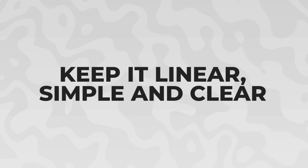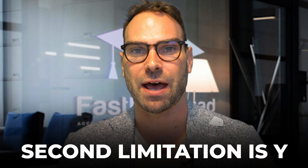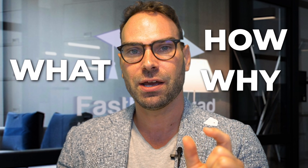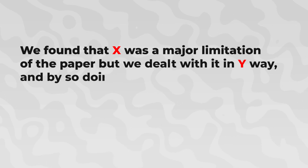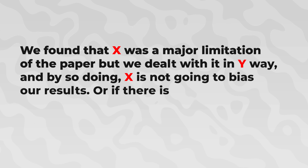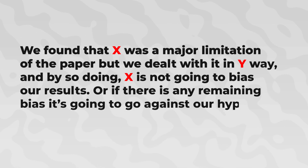I recommend keeping it linear, simple, and clear — that's what scientific writing is all about. So what you want to do, simply: first limitation was this, second limitation was that. For each limitation, you want to succinctly state what it was and then how you dealt with it, or why it's really not going to affect your results. One common flow: 'We found this was a major limitation of the paper, but we dealt with it in the following way, and by so doing it's not going to bias our results. Or if there is any remaining bias, it's going to go against our hypothesis, making it harder to prove what we were hoping to prove.'